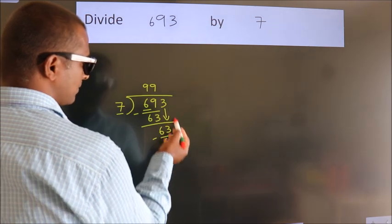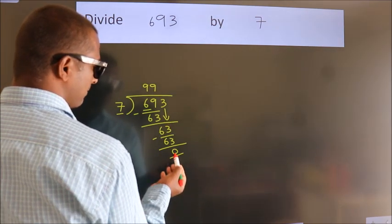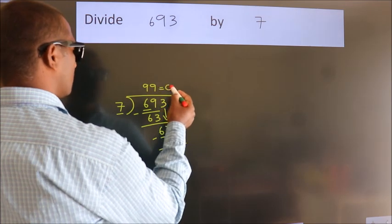After this, no more numbers to bring down, and we got remainder 0. So this is our quotient.